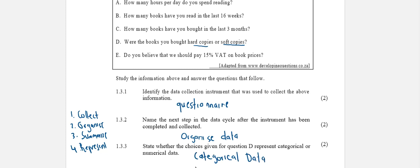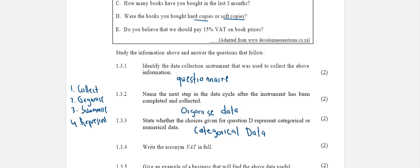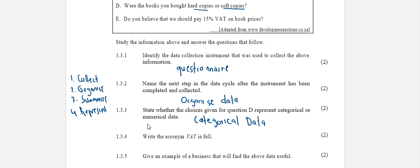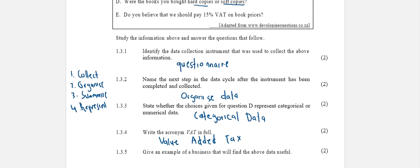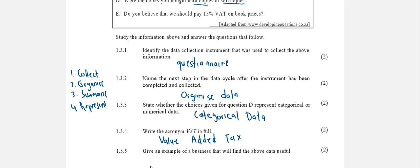If you look at the previous question, question C asks how many books have you bought in the last three months. The person must give a number here, so the person will either say I bought two books, I bought one book. Because they're given a number to answer this question, this would be numerical. But for D it's categorical because the person must choose between categories. Question 1.3.4: Write the acronym VAT in full. That stands for Value Added Tax. The final question: Give an example of a business that should find the above information useful. I think a bookshop would find this information useful. That's the end of question one.